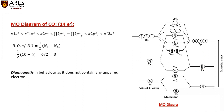Oxygen is more electronegative than carbon, so the atomic orbitals of oxygen are at a lower energy state. When the 1s orbital of carbon combines with the 1s orbital of oxygen, sigma 1s and sigma* 1s form. Then 2s orbitals combine, forming sigma 2s. After sigma 2s, the pi 2p orbitals fill first, then sigma 2p.